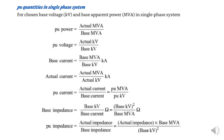Per-unit quantities in the single-phase system: for a chosen base value of kilovolts and base apparent power in MVA in a single-phase system, we calculate the per-unit power, per-unit voltage, per-unit current, and per-unit impedance. Per-unit power is the actual MVA divided by base MVA. Per-unit voltage is actual kV divided by base kV.